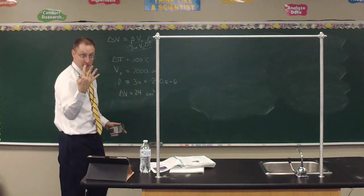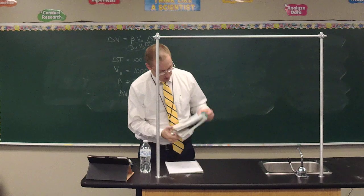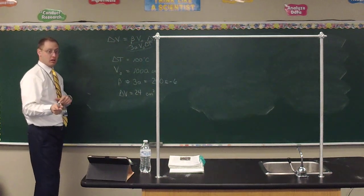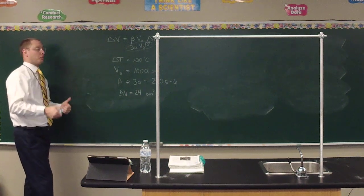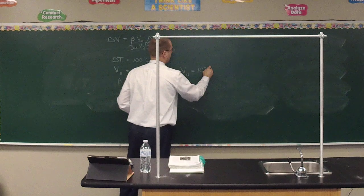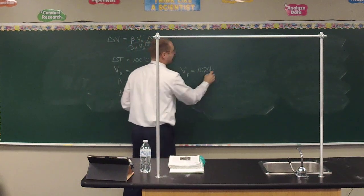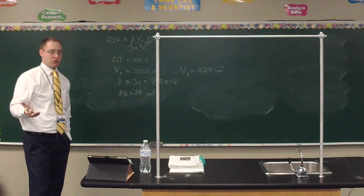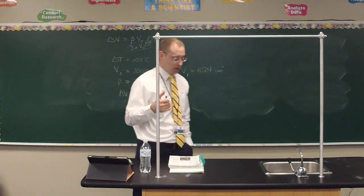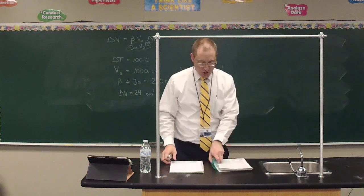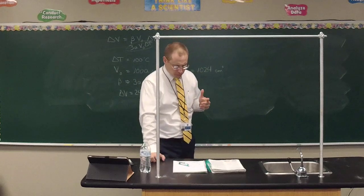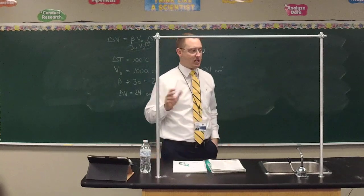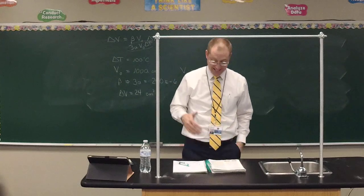The change in volume is 24.00 cm³. The question asks for the new volume: V_final = 1,000.0 + 24.00 = 1,024 cm³ — four sig figs. Questions on that? To summarize: if a problem involves area (squared units), double the alpha value; if it involves volume (cubic units), triple the alpha value.